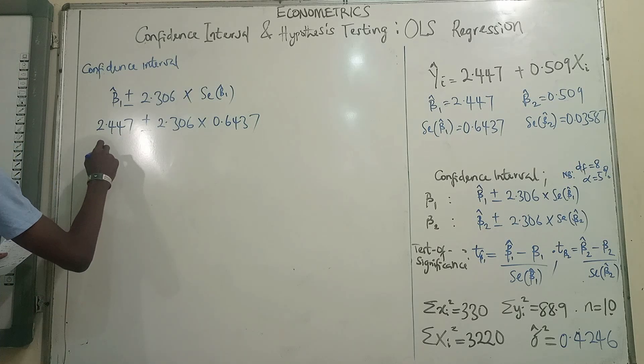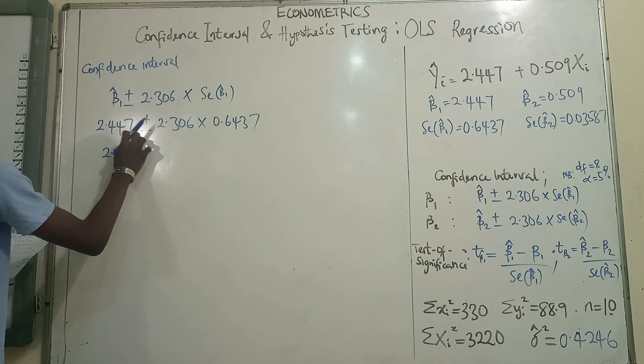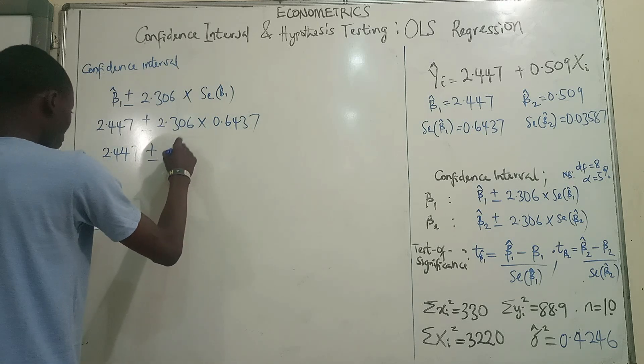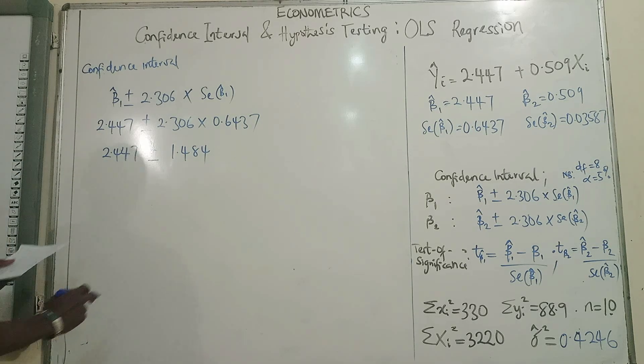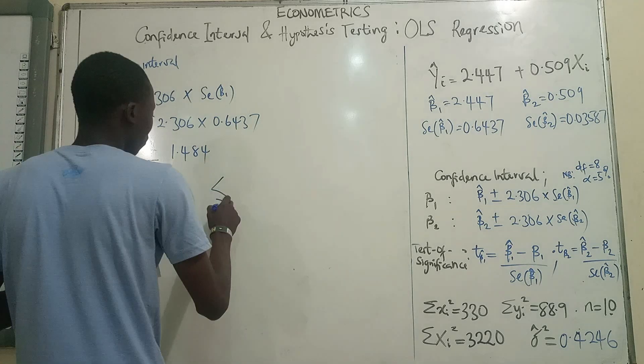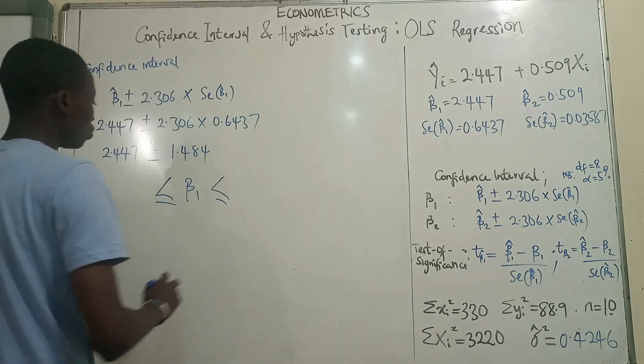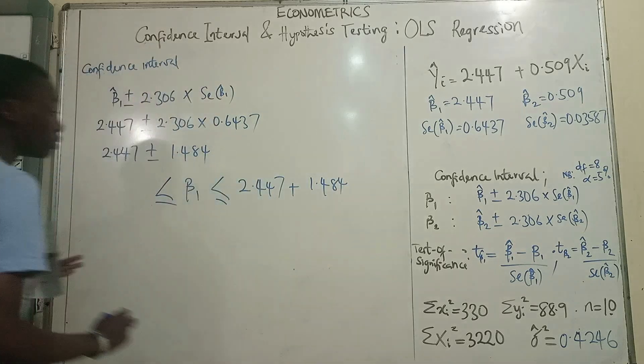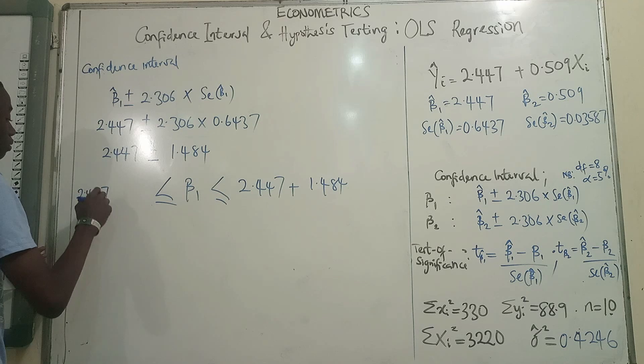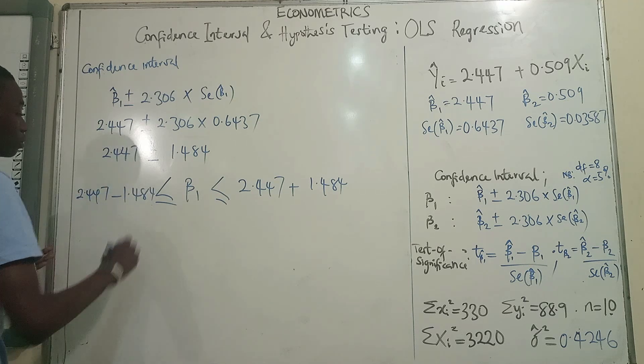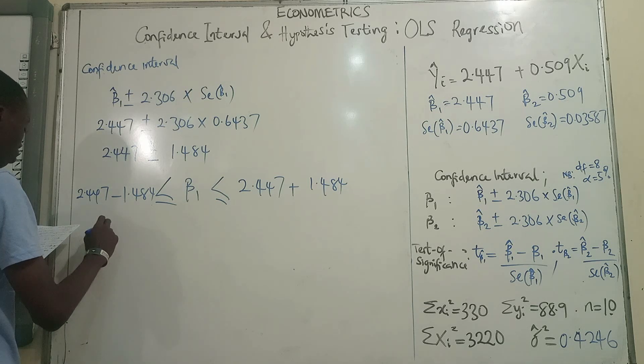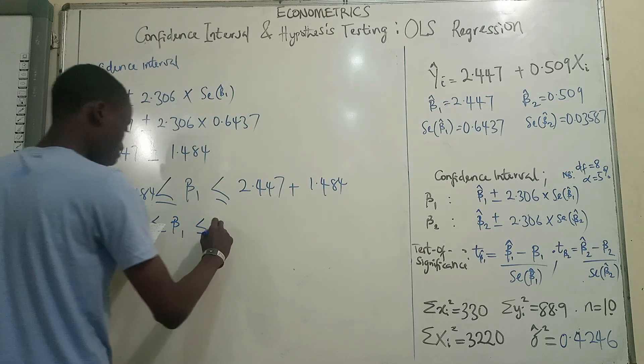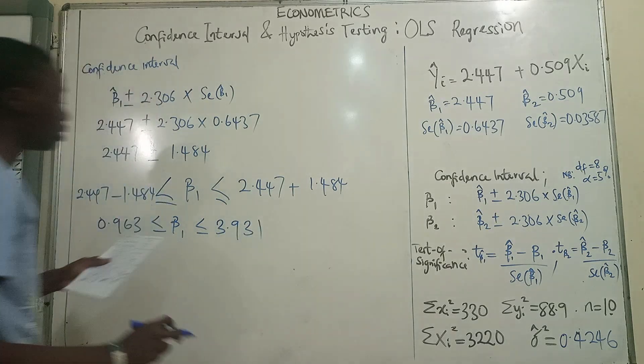And with this we have 2.447 plus or minus this times this will give us 1.484. So what this means is that our confidence interval for beta 1 is between 2.447 plus 1.484 and 2.447 minus 1.484.